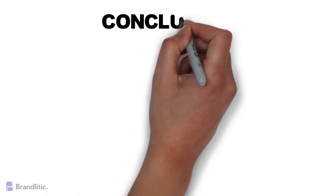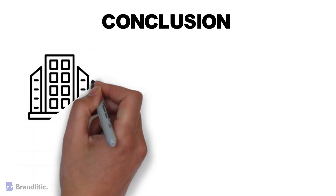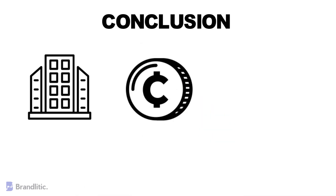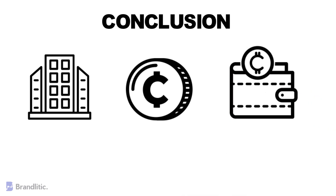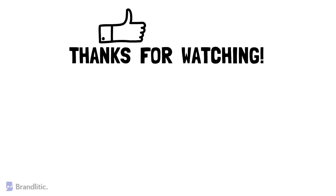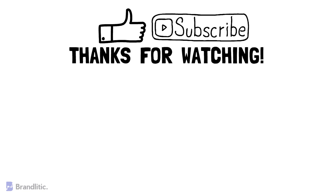As a conclusion, impermanent loss is the sole reason why big financial institutions don't enter liquidity pools. This issue should be solved if AMMs are to achieve widespread adoption among businesses and individuals worldwide. Though various forks of Uniswap have emerged in recent months trying to solve this issue, we are yet to see a clear winner. I hope this video was helpful and served value. If you love the content, feel free to smash that like button and subscribe to the channel.